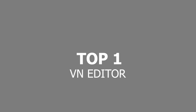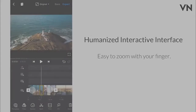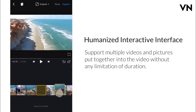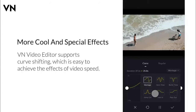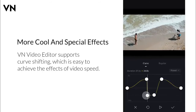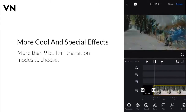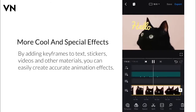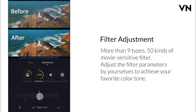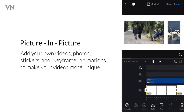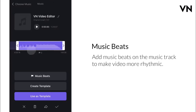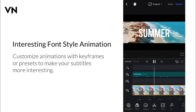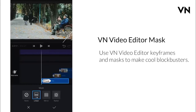Top 1 is a VN editor. This is a professional editor. We have speed adjustment and keyframe similar to Adobe Premiere. We have filter adjustment and a feature within features. We have music beats and music.